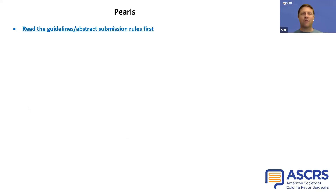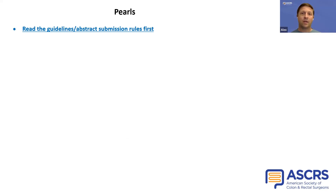And now for a couple of pearls on how to write a high-impact abstract. First and foremost, read the guidelines and abstract submission rules before you do anything else. Different meetings and different abstract submission requests have different rules. Some ask for character counts, some ask for word counts, and some limit the amount of text and figures that you can put in your abstract. Make sure you know these before you get started.